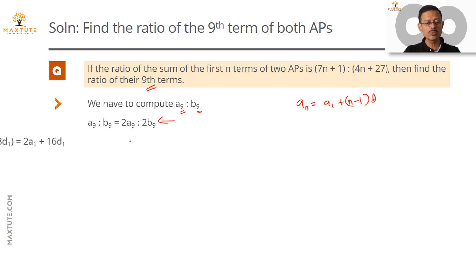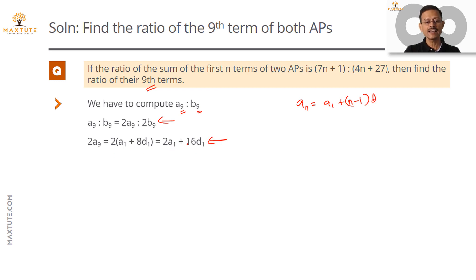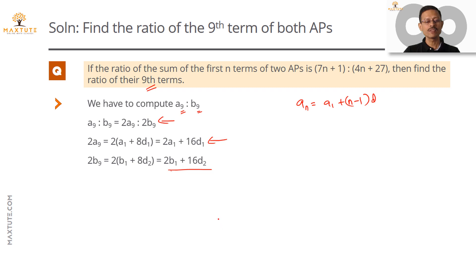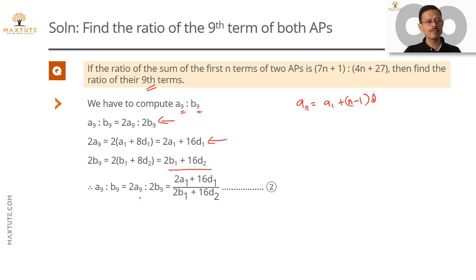2A9 = 2·(A1 + 8D1) = 2A1 + 16D1. Similarly, 2B9 = 2B1 + 16D2. So A9 : B9 is the same as 2A9 : 2B9, which in fractional form is (2A1 + 16D1) / (2B1 + 16D2). Let's call this Equation 2.